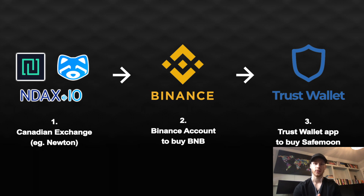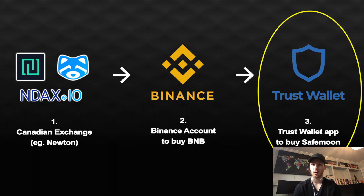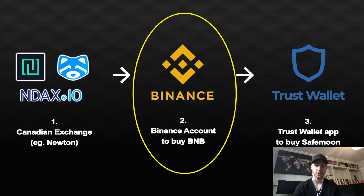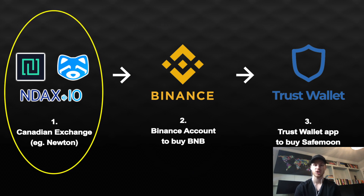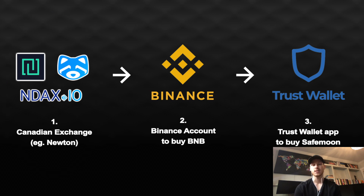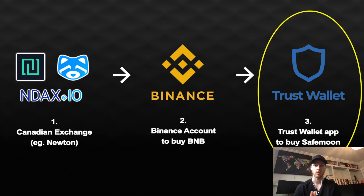There are three apps that we need. Starting at the end: you need the Trust Wallet — this is the app that will actually buy SafeMoon on. It's a free app you can download on iOS or Google Play. You also need a Binance account. All you need is an email address to sign up, so it's super easy. Lastly, you need an account on a Canadian crypto exchange — you might already have one. Popular options are Shakepay, Ndax, and Newton. If you want the lowest fees, I recommend Newton.